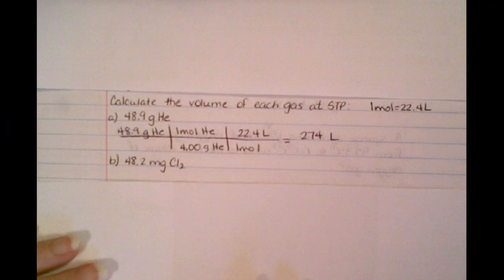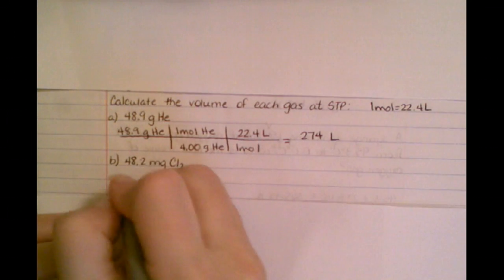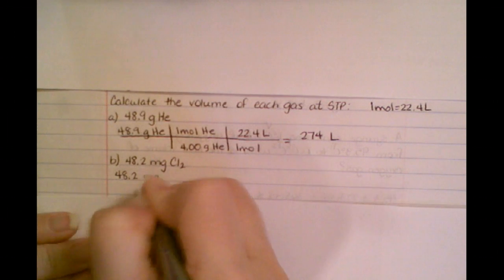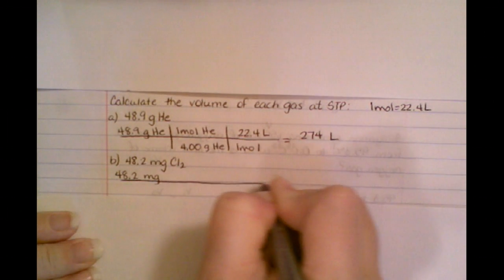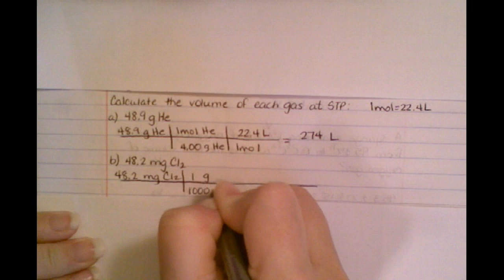So when we look at the next example, now it's in milligrams. So I've got to add one more step in here because we have to first be in what unit? Well, we have to be in grams. So I need to first convert this to grams. So in one gram, there are 1,000 milligrams.